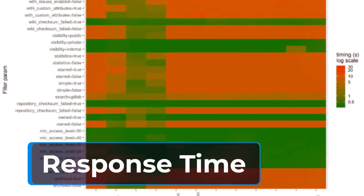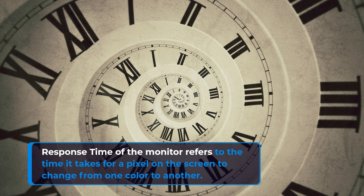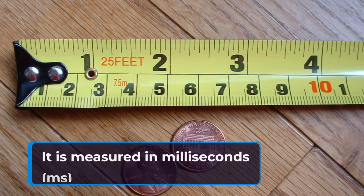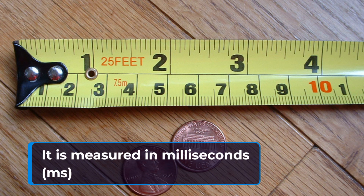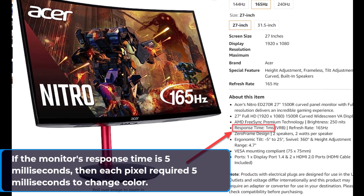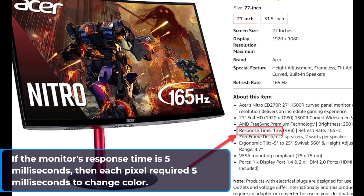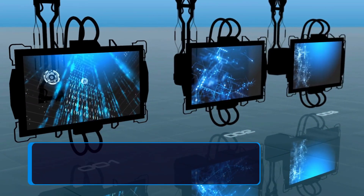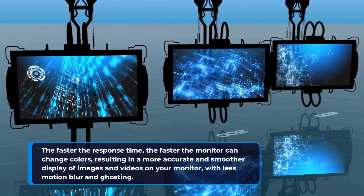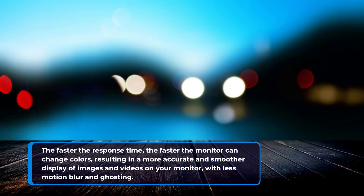Response time of the monitor refers to the time it takes for a pixel on the screen to change from one color to another. It is measured in milliseconds (ms). If the monitor's response time is 5 milliseconds, then each pixel requires 5 milliseconds to change color. The faster the response time, the faster the monitor can change colors, resulting in a more accurate and smoother display of images and videos with less motion blur and ghosting.